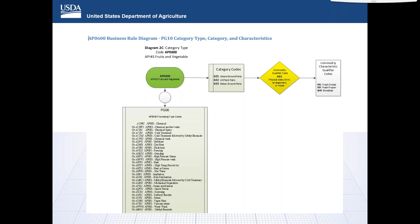For example, lettuce from Mexico would not require a PG-006 processing code if no treatment is required. Lettuce would use a 601 above ground parts category code, meaning all parts of a plant growing above ground. Fruits and vegetables would have three choices for commodity characteristic qualifier codes: FRC for fresh chilled; FRF, preserved by commercially acceptable freezing methods, such that the commodity remains at minus 6.7 degrees Celsius for a minimum of 48 hours prior to release; or SHR, shredded or chopped with leaves not exceeding 10 centimeters in length and 38 millimeters in width.